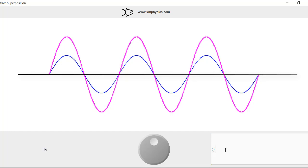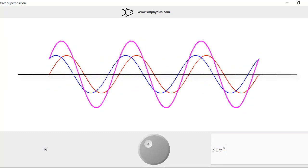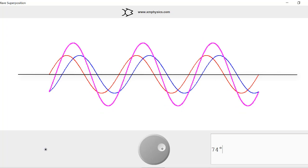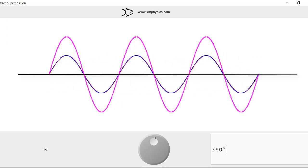So we get constructive interference when the phase difference is zero. But when they are off by one complete cycle, they are in phase again. That's the phase difference of 2π radians. If the phase difference is 4π radians, so they are off by 2 complete cycles, we get constructive interference again.